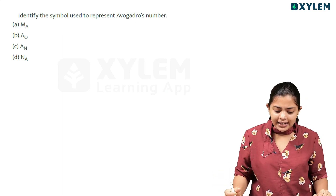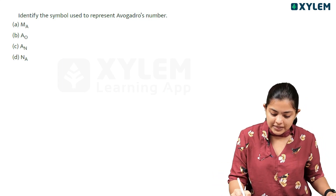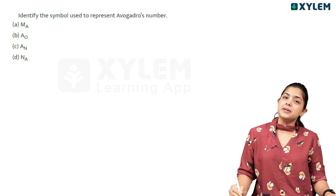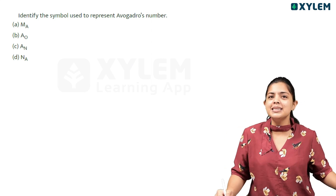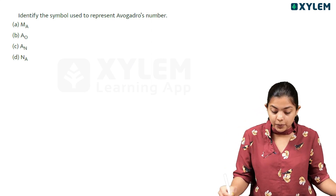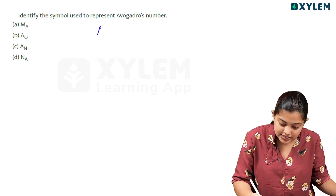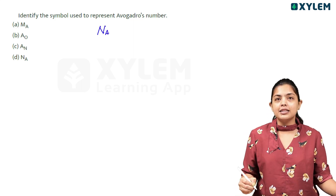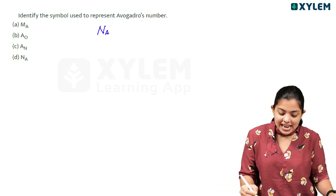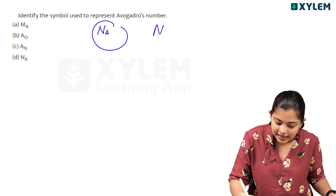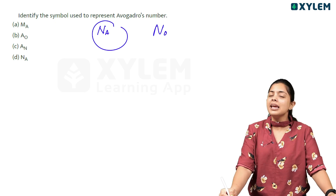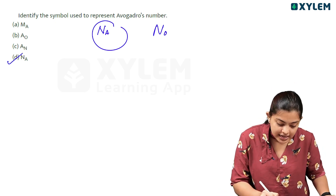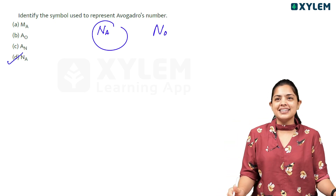First question: identify the symbol used to represent Avogadro number. Avogadro number represents a count of particles. The symbol is capital N with small letter A — that is N subscript A. So option D is our answer.